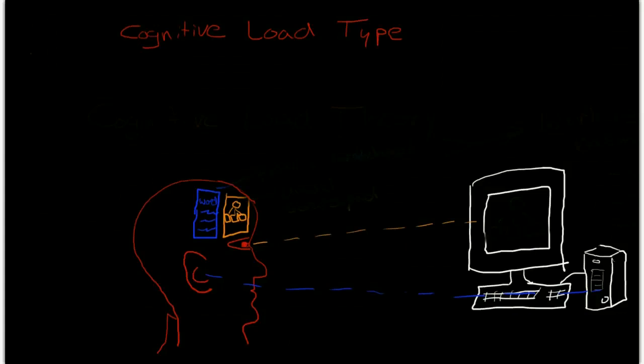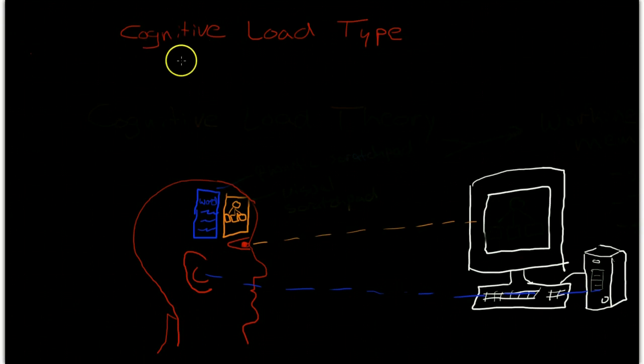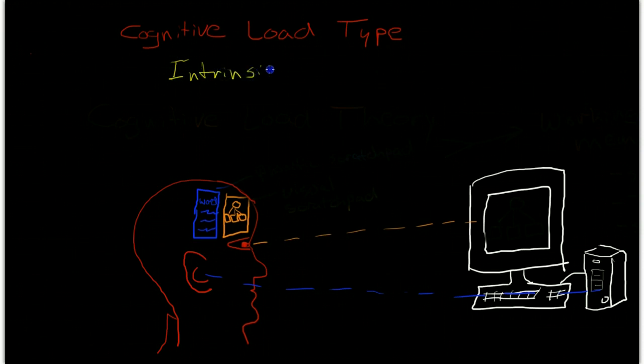In continuation of our discussion of cognitive load theory, I'd like to introduce three different types of cognitive load. Cognitive load is load that is placed on working memory, which has a very finite capacity. There are three types of cognitive load.